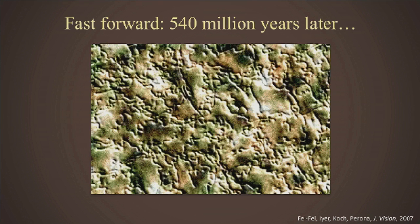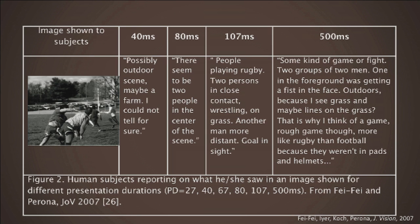Here is one result from our actual experiment. In 40 milliseconds, people can describe a rough scenery, but by 500 milliseconds, it's like eternity — people can write novels about it. This is how remarkable our human visual system is. After 540 million years of evolution, intelligent animals like us use vision to survive, navigate, work, entertain, and communicate. It has become the most important piece of our intelligence.